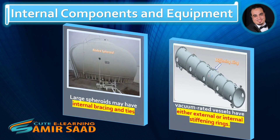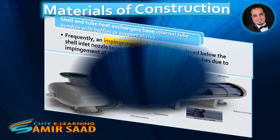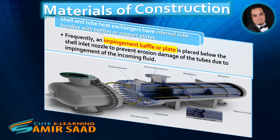Large spheroids may have internal bracing and ties. Most vacuum-rated vessels have either external or internal stiffening rings. Shell and tube heat exchangers have internal tube bundles with baffles or support plates. Frequently, an impingement baffle or plate is placed below the shell inlet nozzle to prevent erosion damage of the tubes due to impingement of the incoming fluid.